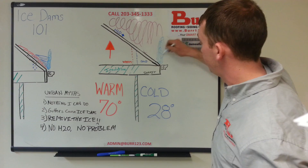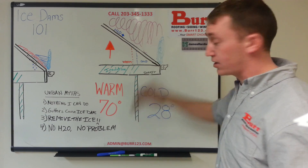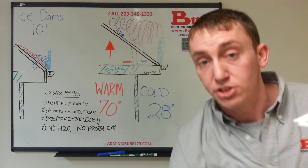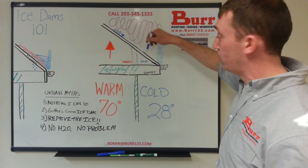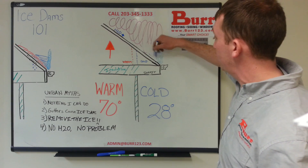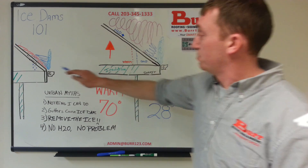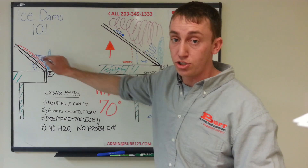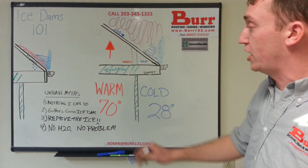That ice dam itself is not causing the leaking — it's not coming into your house. What causes the problem is the continued snow melt uphill of the ice dam, pooling water, which simply overflows your shingles. A shingle roof is not waterproof; it's water shedding.